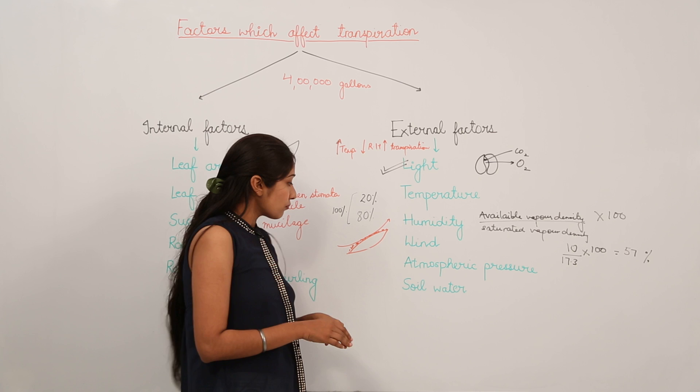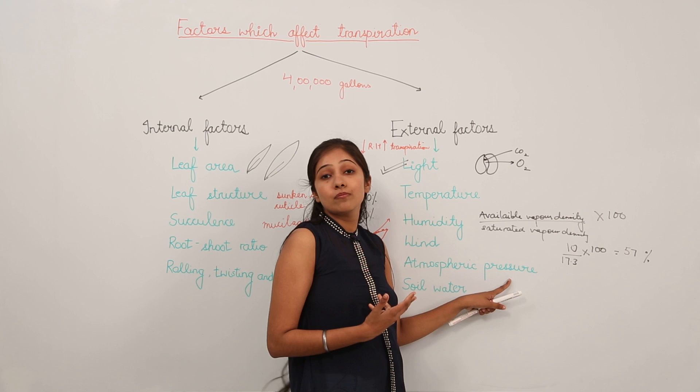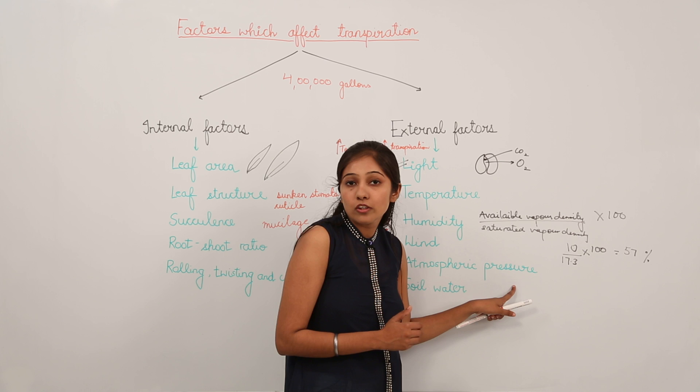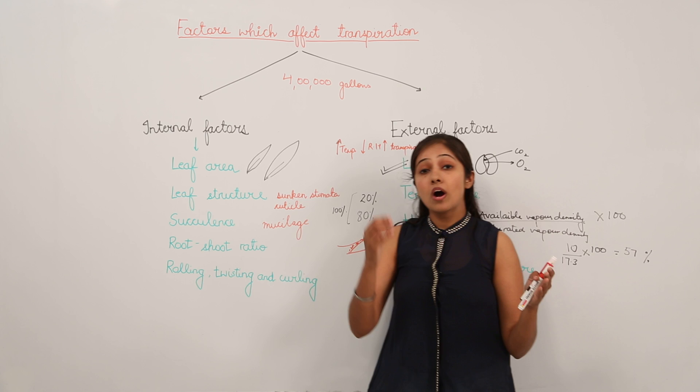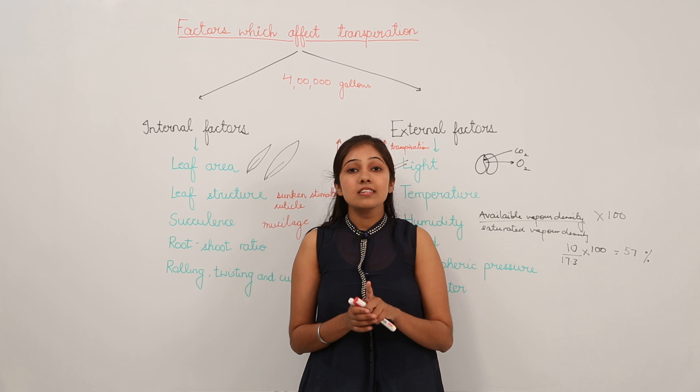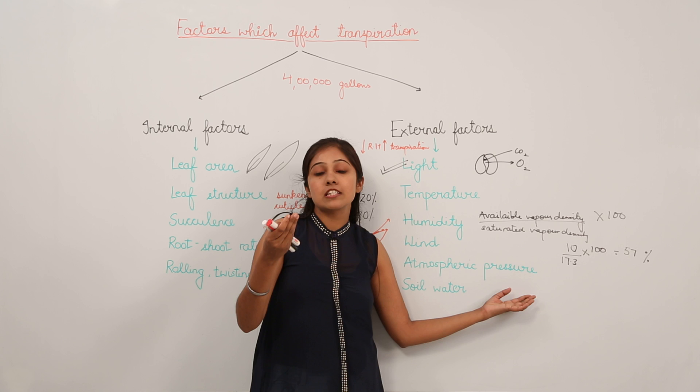Next we move on to atmospheric pressure. It also has an inverse relationship with the rate of transpiration. More atmospheric pressure means lesser rate of transpiration; less atmospheric pressure means more rate of transpiration. Low atmospheric pressure is found at high altitudes — as we go above sea level, atmospheric pressure is reduced, which leads to an increase in the rate of transpiration.